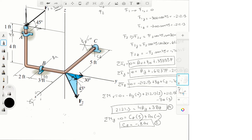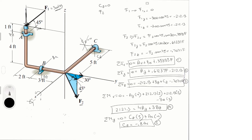Sum of moments in z equals zero — as if looking from the top of the positive z-axis with counterclockwise positive: Bx times 3 plus Ax times 5 equals zero, giving Ax equals minus 0.6 Bx — Equation 6. We now have six equations and six variables.